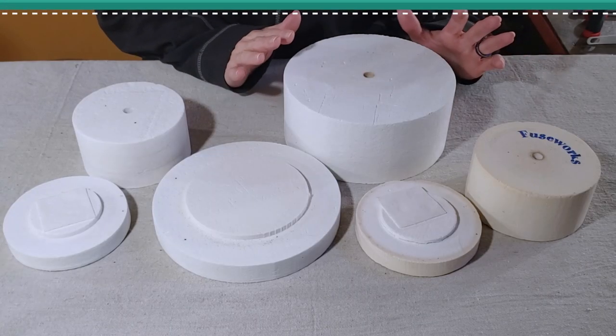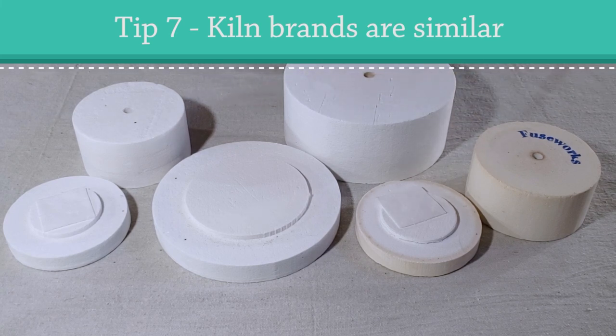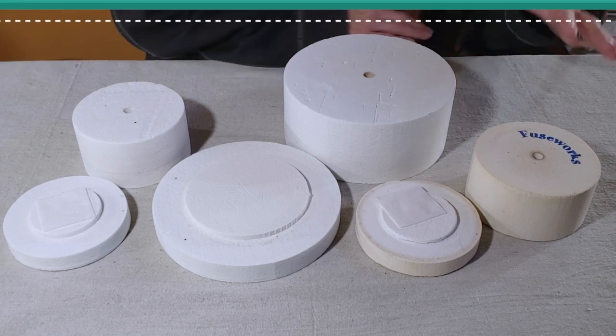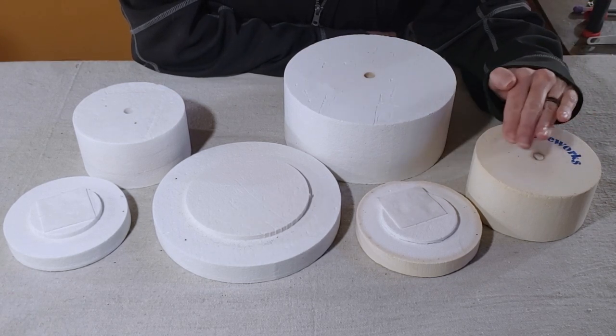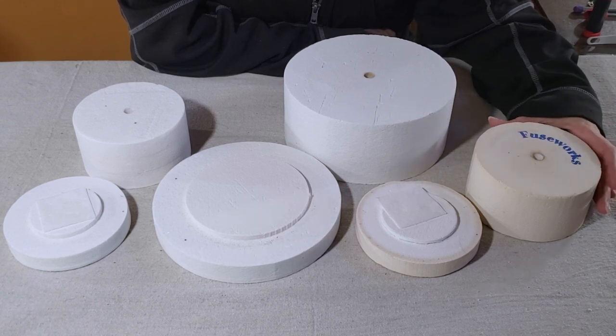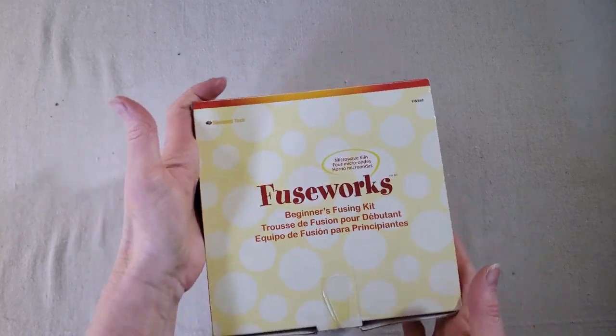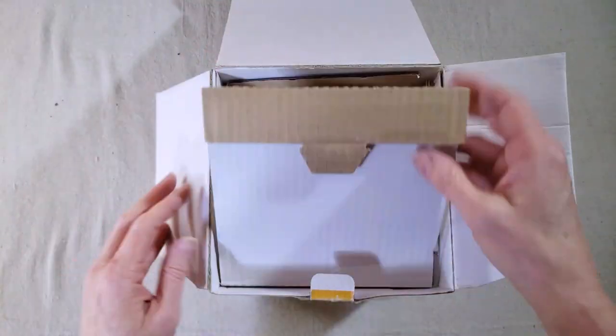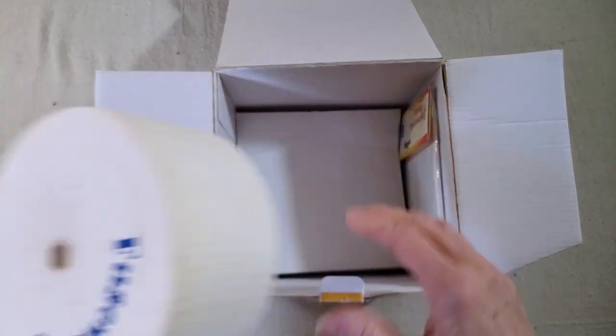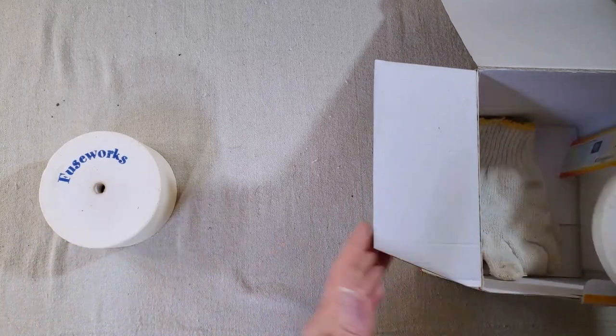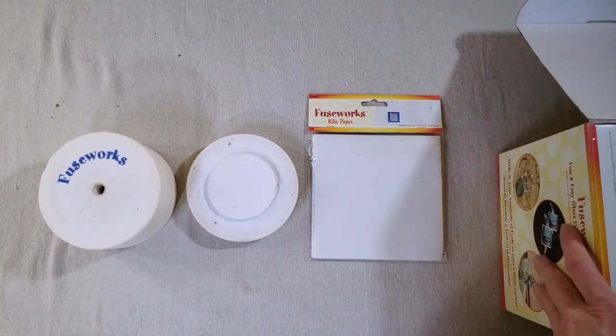Tip number eight is that all microwave kilns are very similar but not exactly alike. I started with this Fuseworks kiln and I've used it hundreds of times. It is one of the more expensive kilns if you purchase one but it also comes with the heat resistant gloves, a cutting tool, some glass fusing paper. You get the entire kit so you might find if you're just starting out that that is worth the investment.